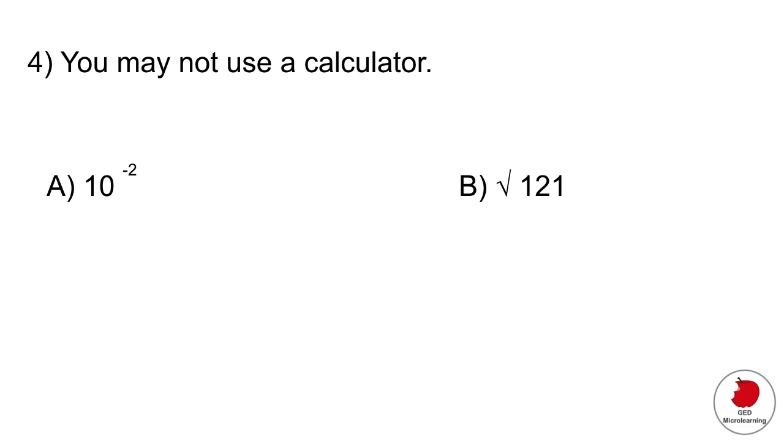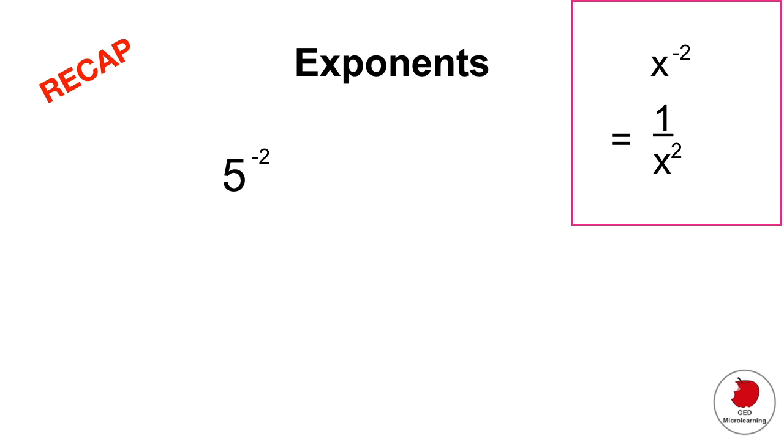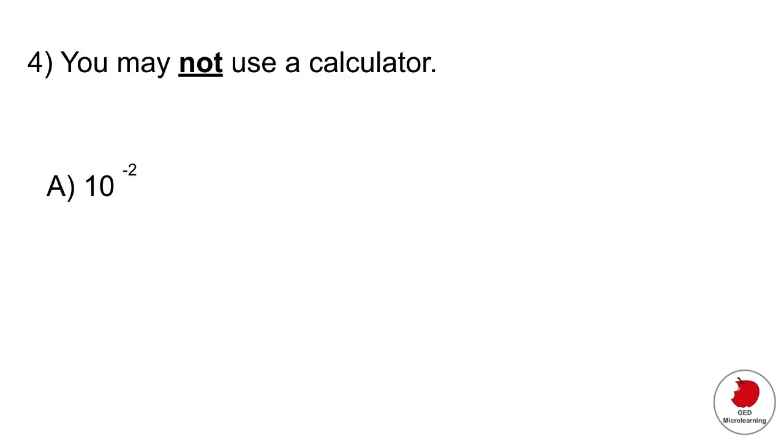Let's do the first one which is 10 raised to the minus two. Here just remember that when you have an exponent raised to the negative power you have to rewrite it and say one over that number and the exponent. Because it says negative two we would say one divided by five raised to the second power. In this case we have to rewrite it to this which gives us one over a hundred.